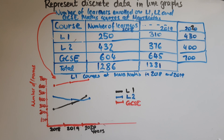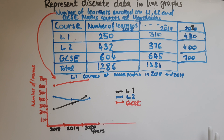Typically, a clue for you: in a line graph, if you've got time on the x-axis — the horizontal axis — that means it is possible to represent the data using a line graph.